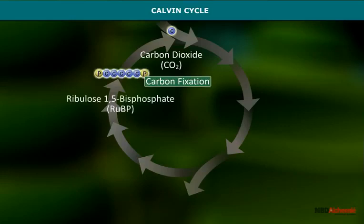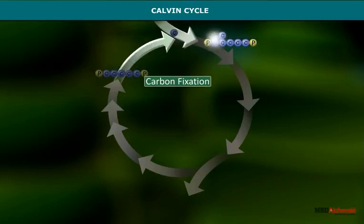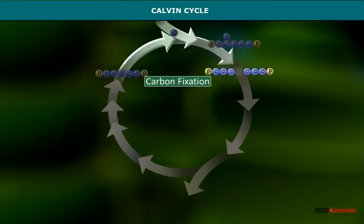The first step is carbon fixation. In this step, carbon dioxide is attached to ribulose-1,5-bisphosphate, resulting in a 6-carbon molecule that splits into 2 3-carbon molecules.